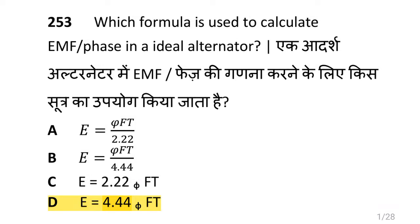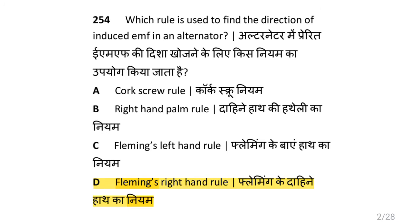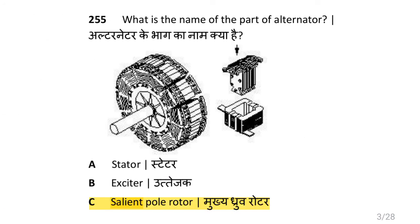Dear friends, we are going to see alternator. Which formula is used to calculate EMF per phase in an ideal alternator, i.e. E is equal to 4.445FΦ? Which rule is used to find the direction of induced EMF in an alternator, i.e. Fleming's right-hand rule? What is the name of part of alternator, i.e. silent pole rotor?